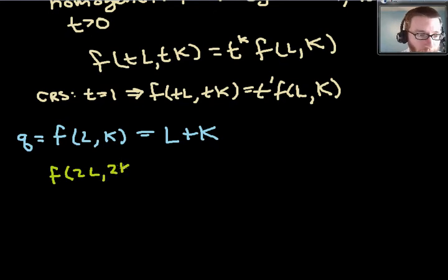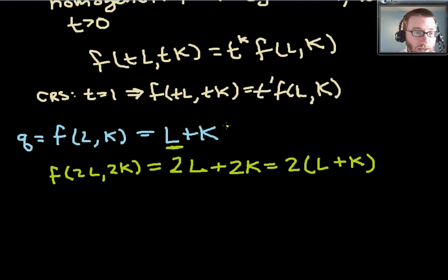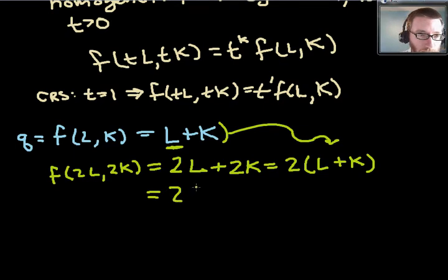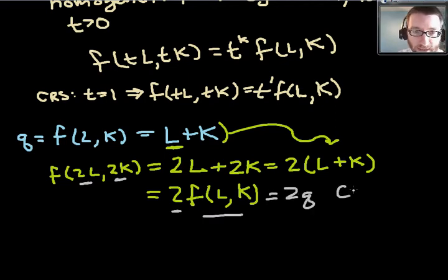What is f of 2L, 2K? Well, that's going to be 2 times L plus 2 times K. And now, using the distributive property of multiplication and addition, we can distribute out that 2, 2 times L plus K. And then, because L plus K was our original production function, it is the case that this is equal to 2 times f of L, K. So, when we doubled our inputs, we ended up with twice the output, 2q. And so, we can say that this production function exhibits constant returns to scale.